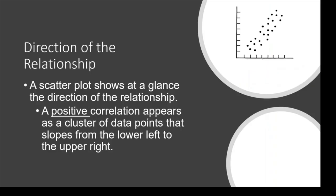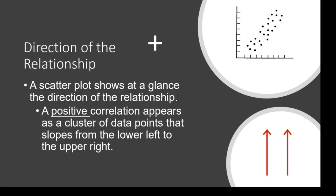Let's talk about the direction of the relationship. This scatter plot shows data points that cluster from the lower left and move to the upper right. If you envision the slope, it would be over one, up one — a sloping upward set of data. If we calculate the correlation coefficient, the number comes out positive. So when the number is positive, the data are moving in the same direction.